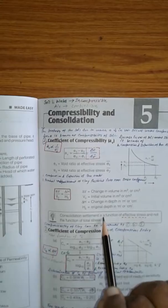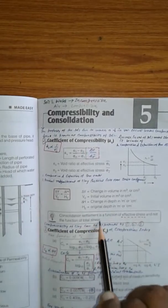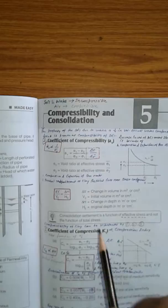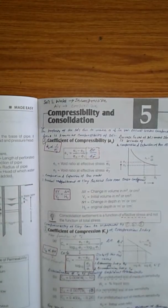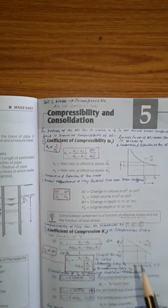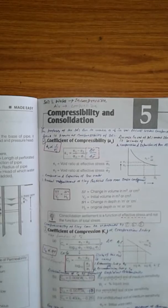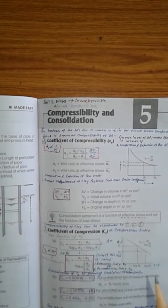Consolidation settlement is a function of effective stress and not the function of total stress. This is the important point in consolidation. If settlement will occur, this is only a function of effective stress, that is sigma bar. Note that total stress is sigma.